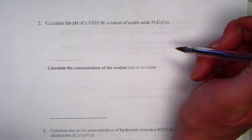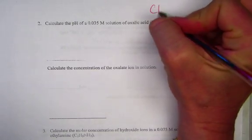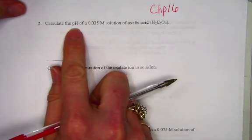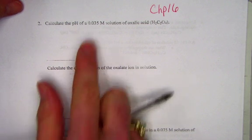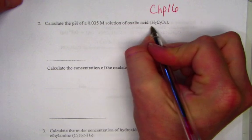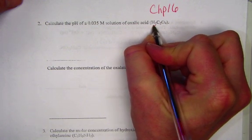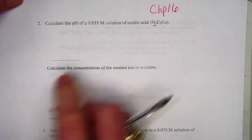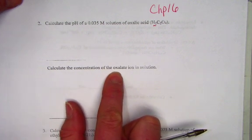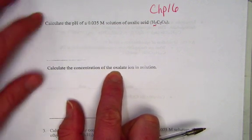Looking at question 2 on our practice test for chapter 16, we are being asked to calculate the pH of a 0.035 molar solution of oxalic acid, a diprotic acid, H2C2O4.